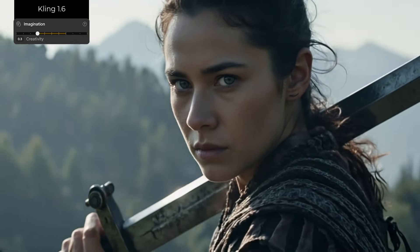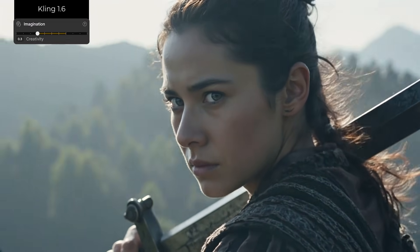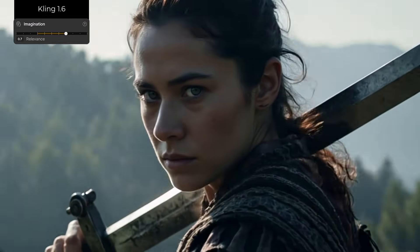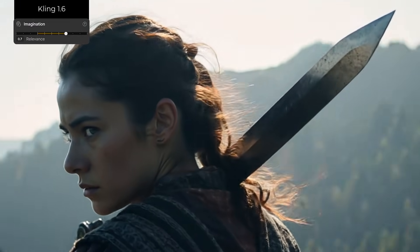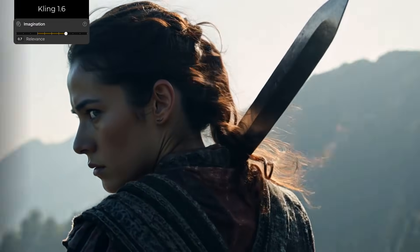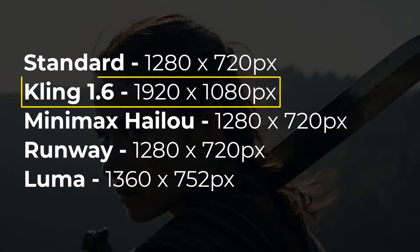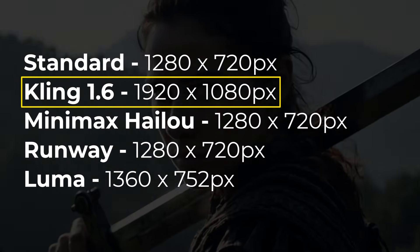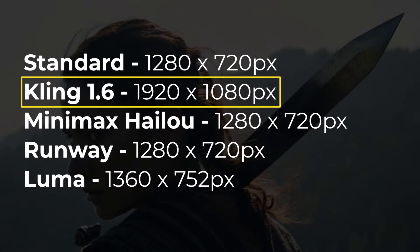Moving on to Cling, which I think is the best and my favorite. With imagination about halfway — dropping it down to three — we've got a little less movement but everything is still crisp and very consistent. Bringing imagination up to seven we get a lot more camera movement and it's still very impressive. On top of that, Cling also had the highest resolution, with most models being 720p and Cling being 1080p.